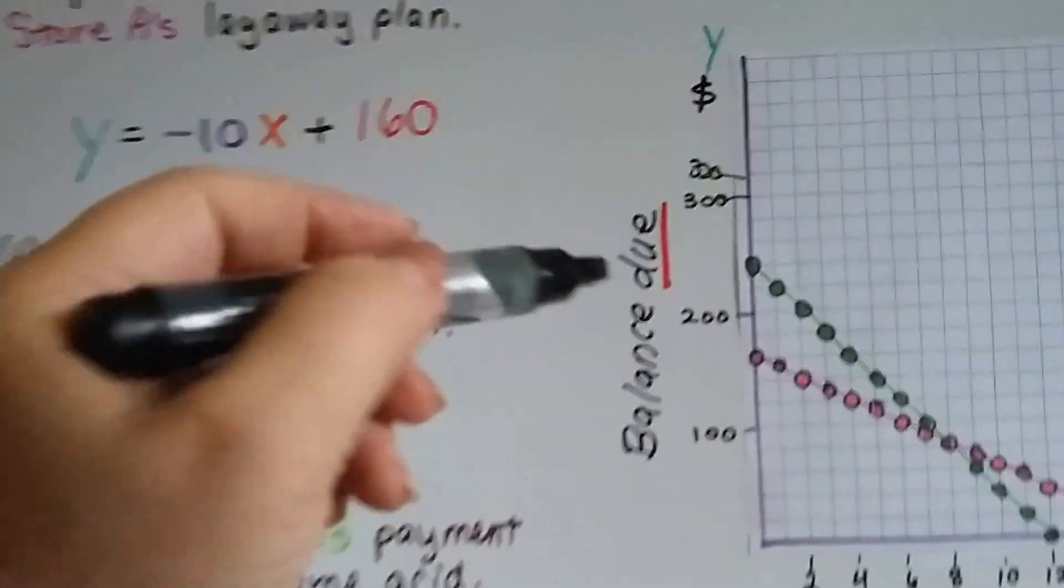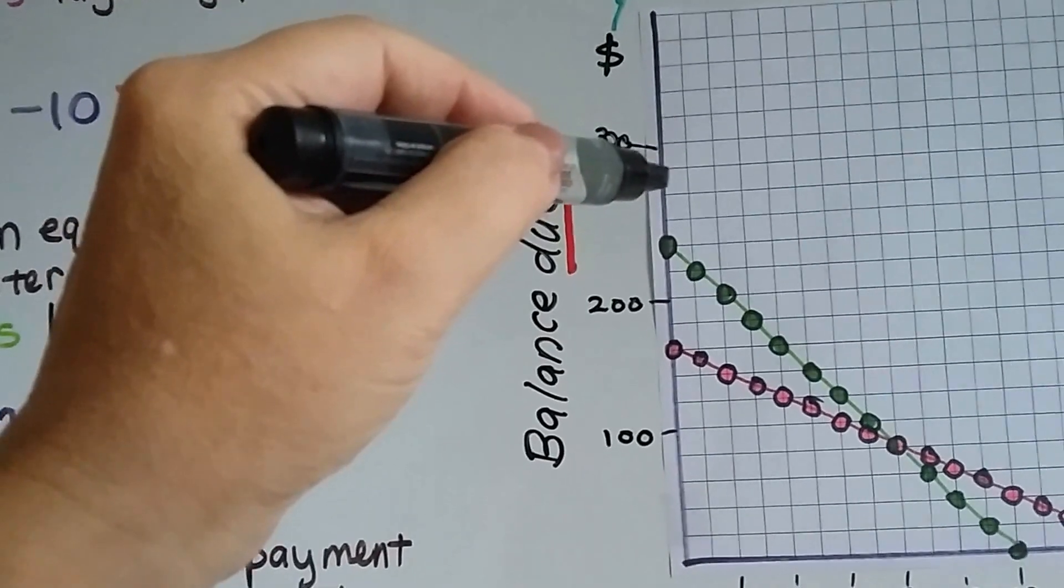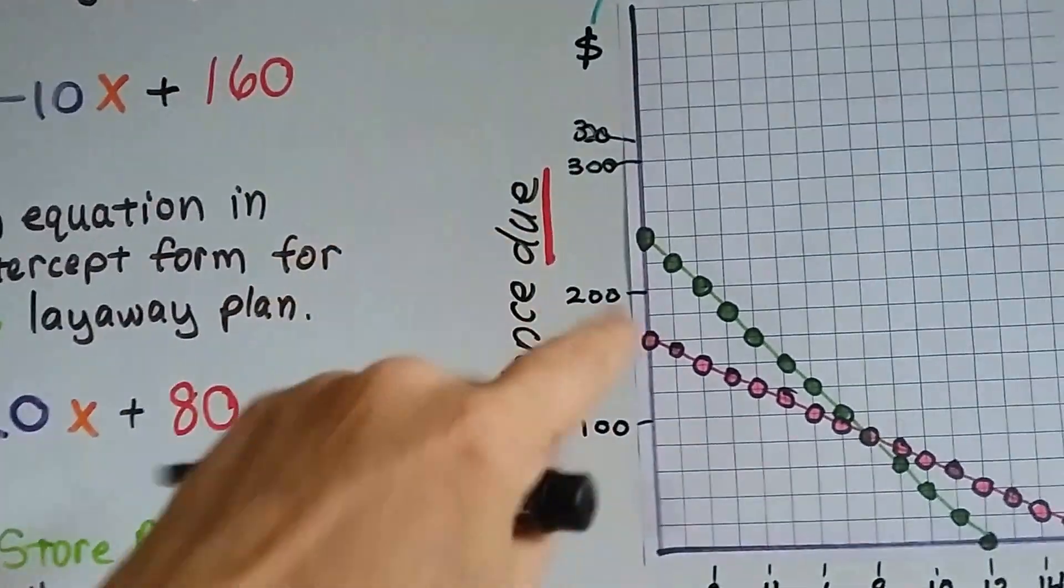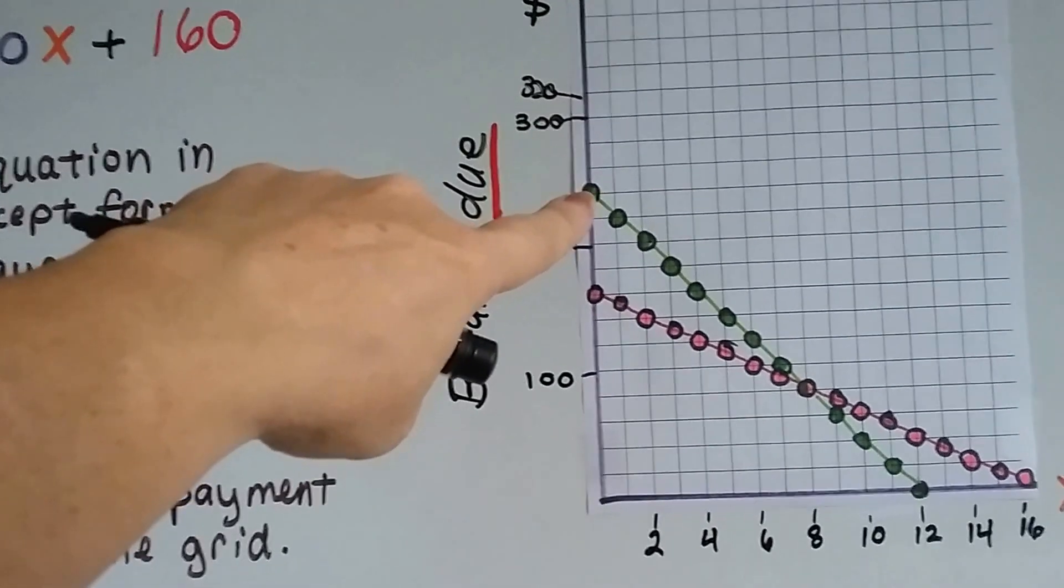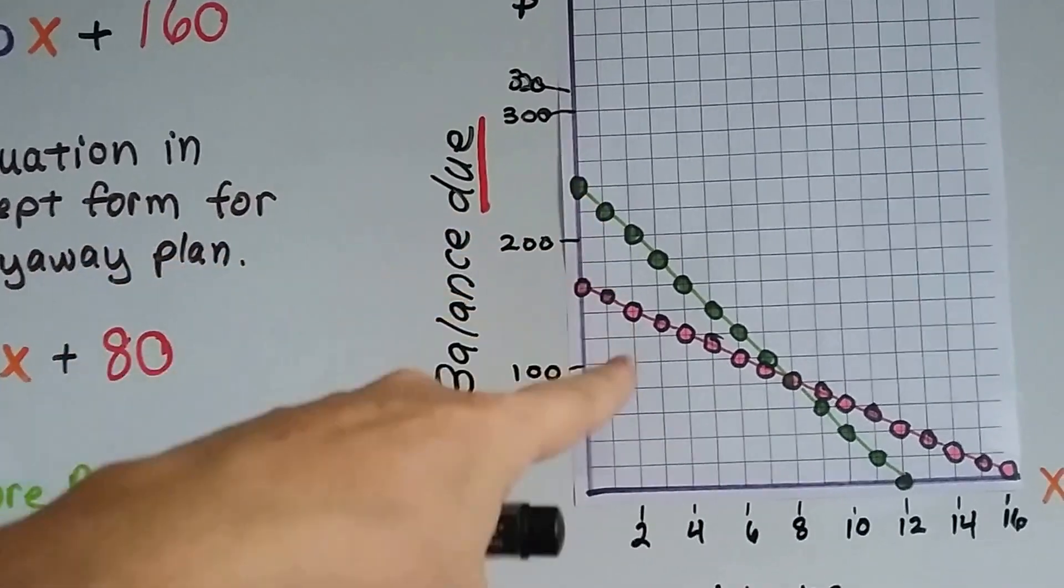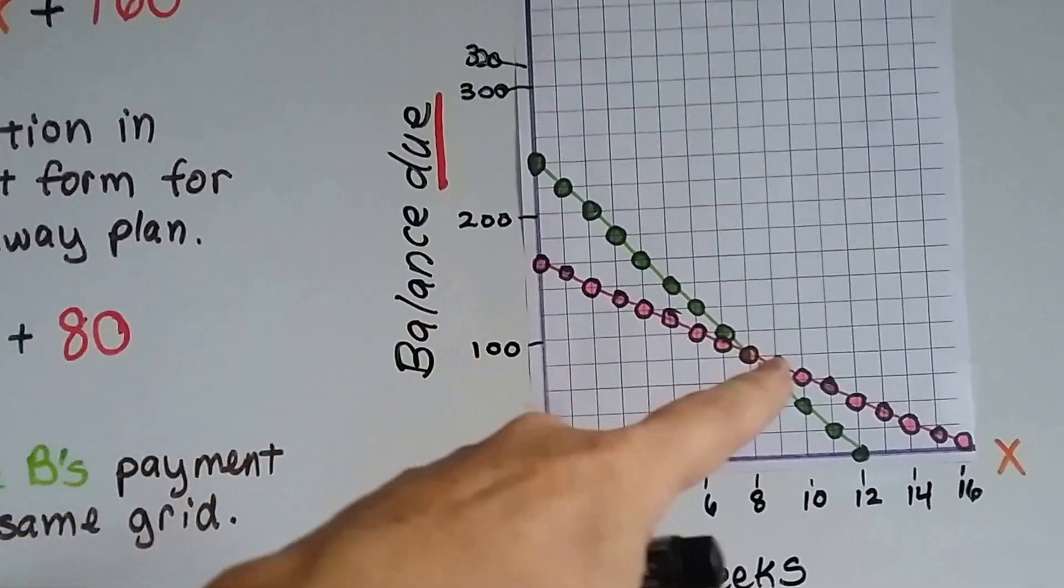So, because it was a $320 game, we came down $80. 20, 40, 60, 80. So that is the initial balance due right here. And each line coming down is $20, so it went down one line each week.